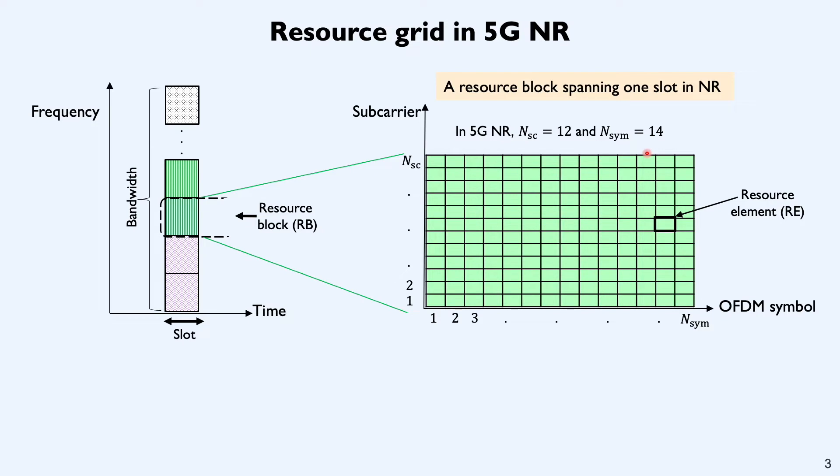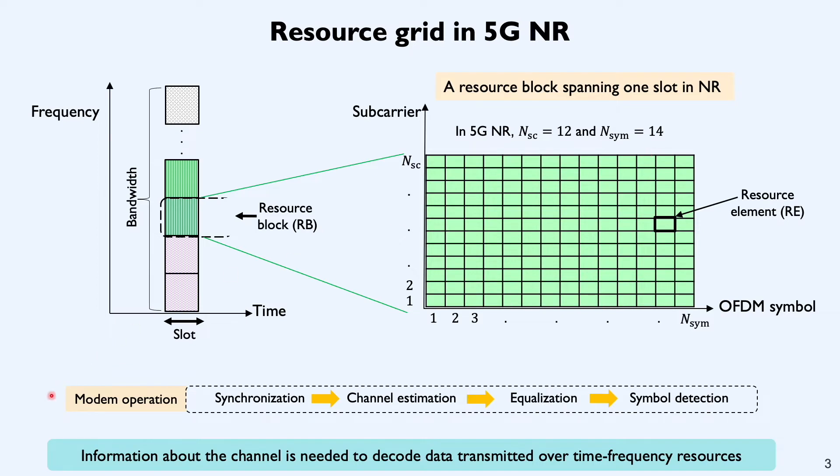Now, when information is sent over some of the REs, how does the receiver actually decode this information? It does so by following a sequence of operations. Channel estimation is a very important step in the modem operation because information about the estimated channel is used for equalization, interference whitening, and finally symbol detection.